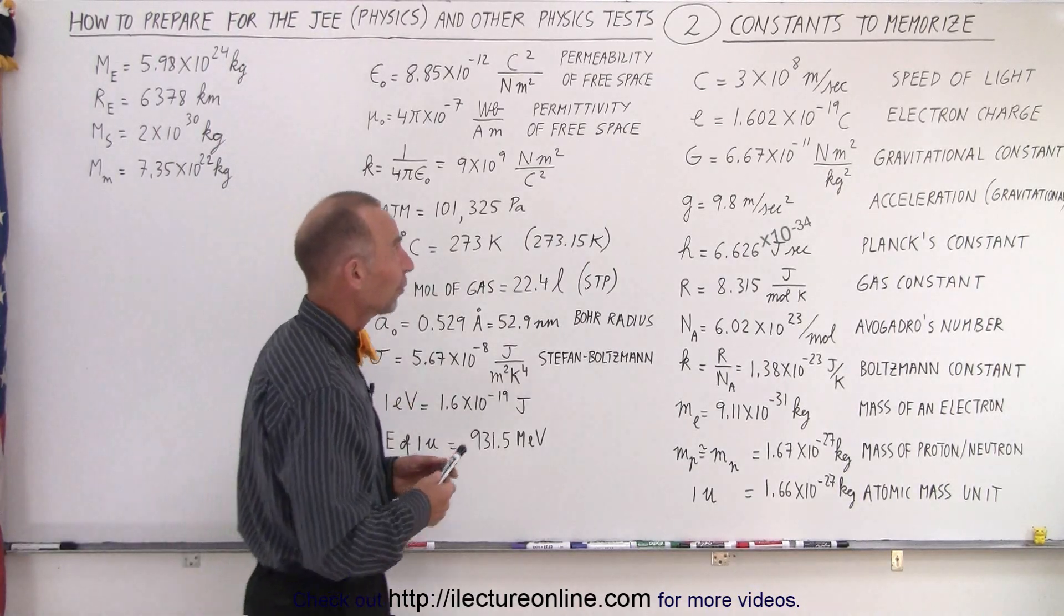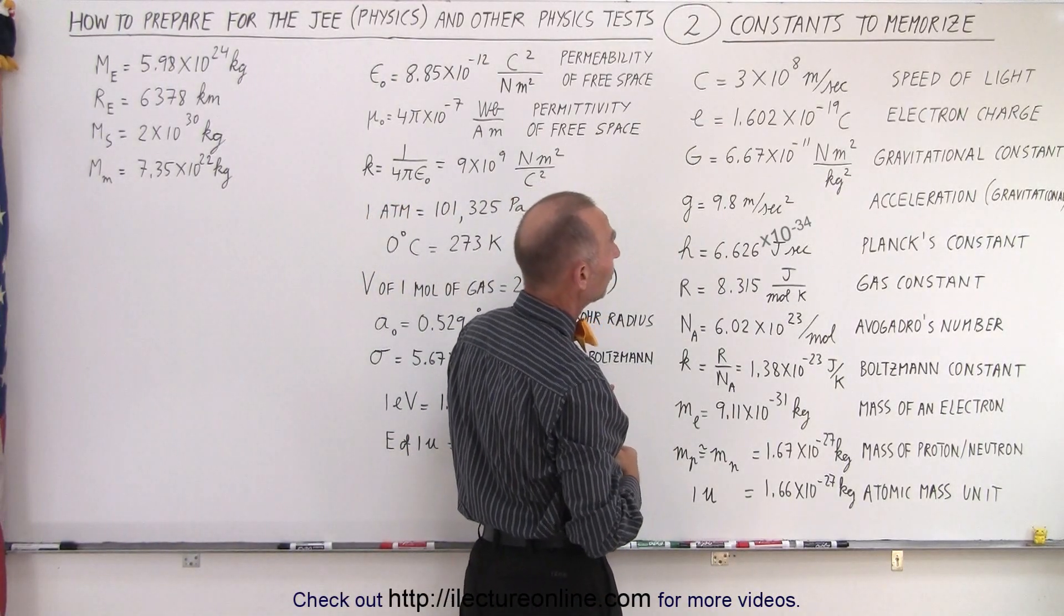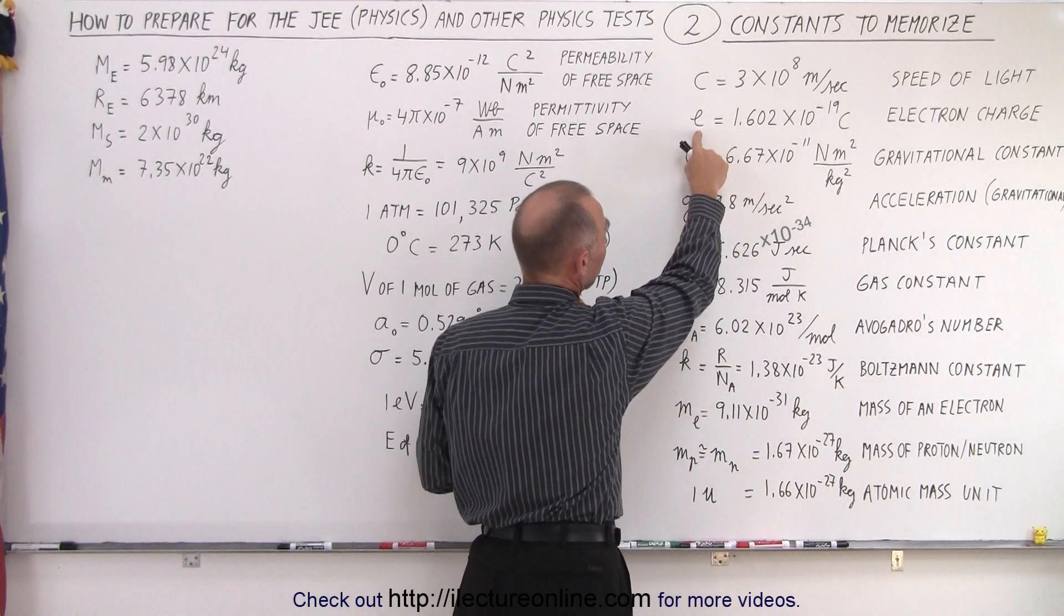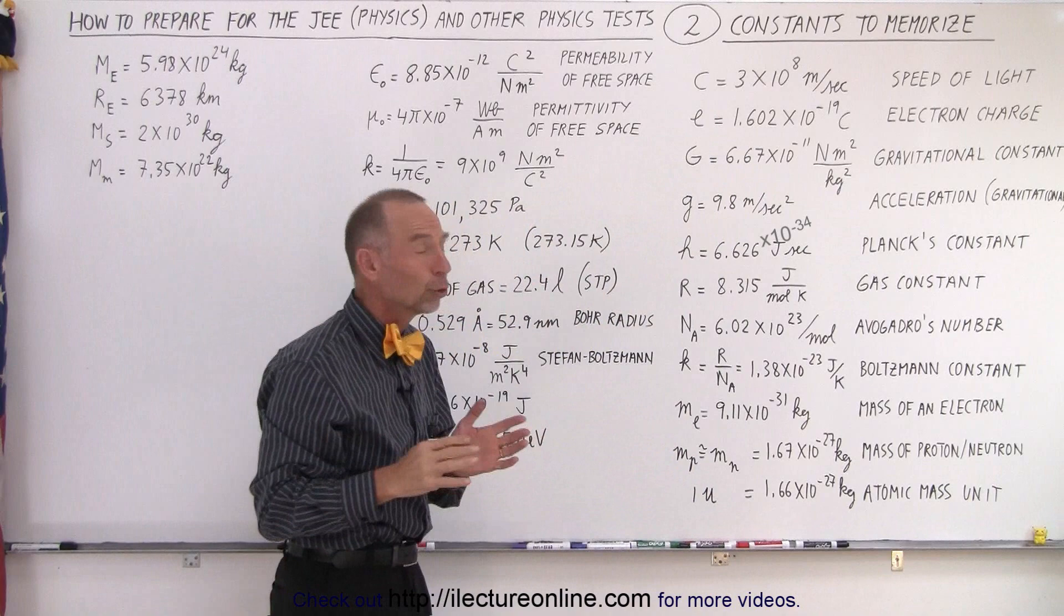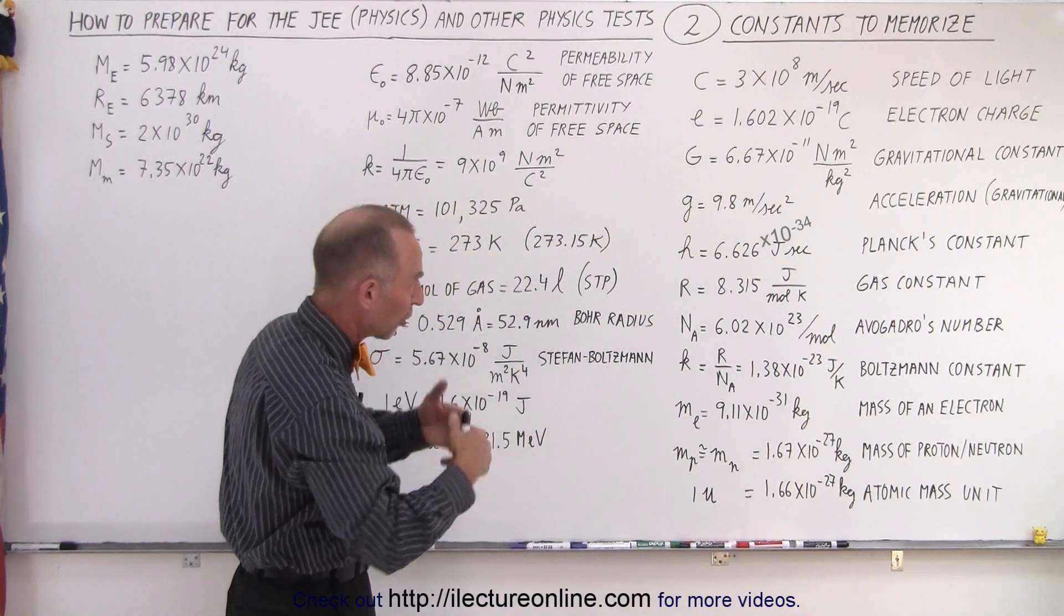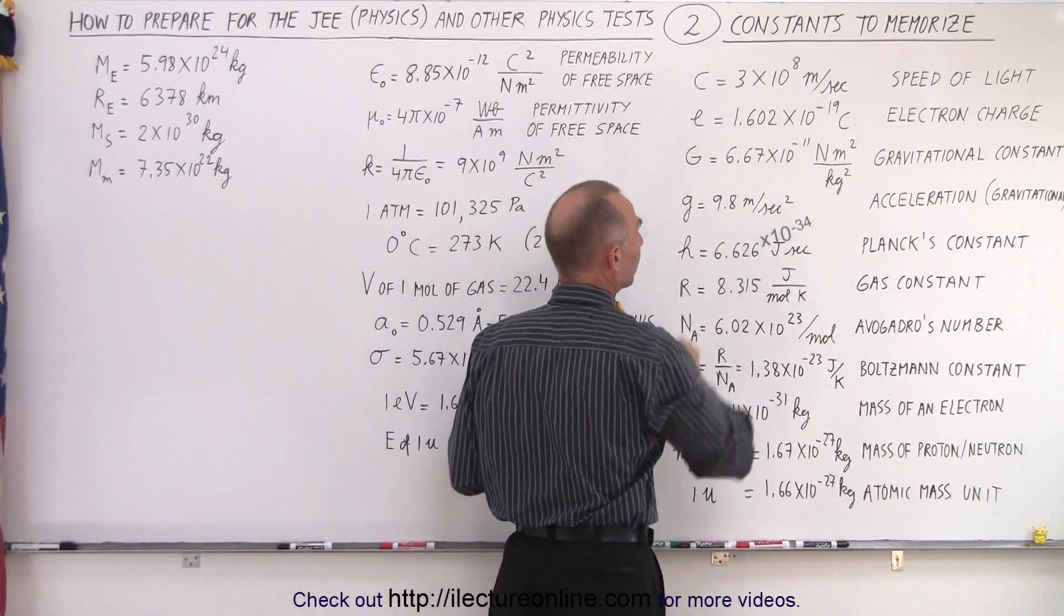So let's go through them. First of all, you have the speed of light, rounded to 3 times 10 to the 8 meters per second. The charge on a single electron, 1.602 times 10 to the minus 19 coulombs, of course we know it's a negative charge, but that's the magnitude of the charge. We could also apply this number to the charge of a proton.